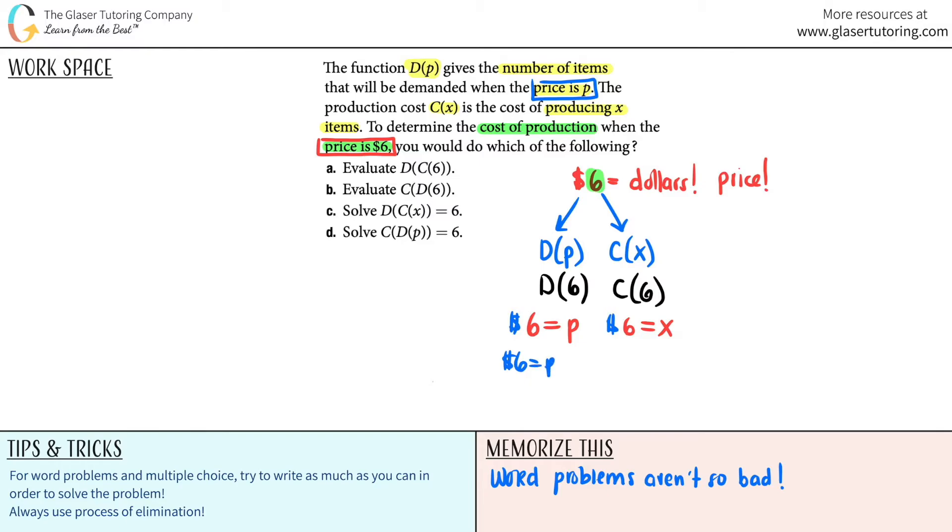So, you know, $6 equals a price, as opposed to producing x items. Is a dollar amount the same as items? Which one makes sense? Yeah, this one, definitely, right? So this one is the one that we go with. These do not make sense.